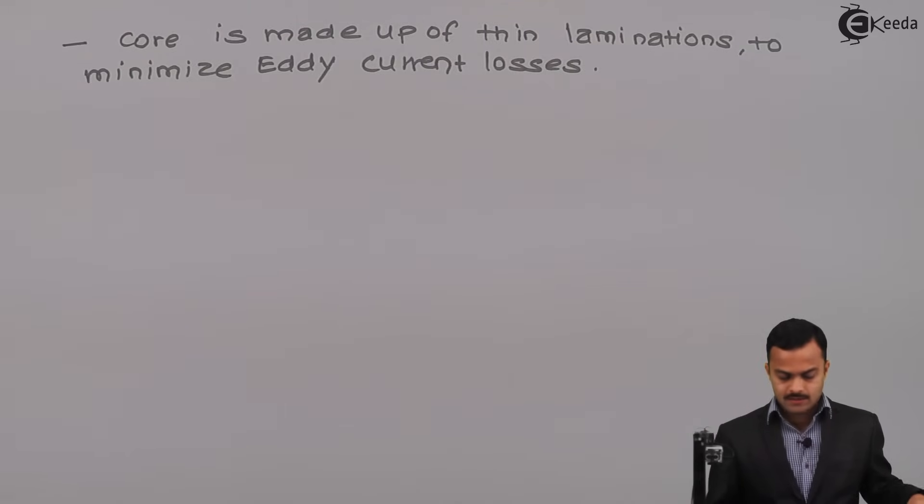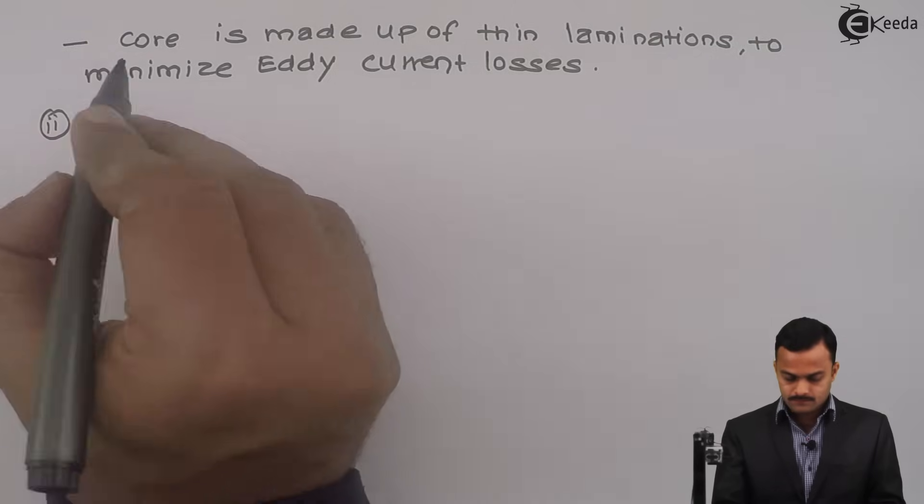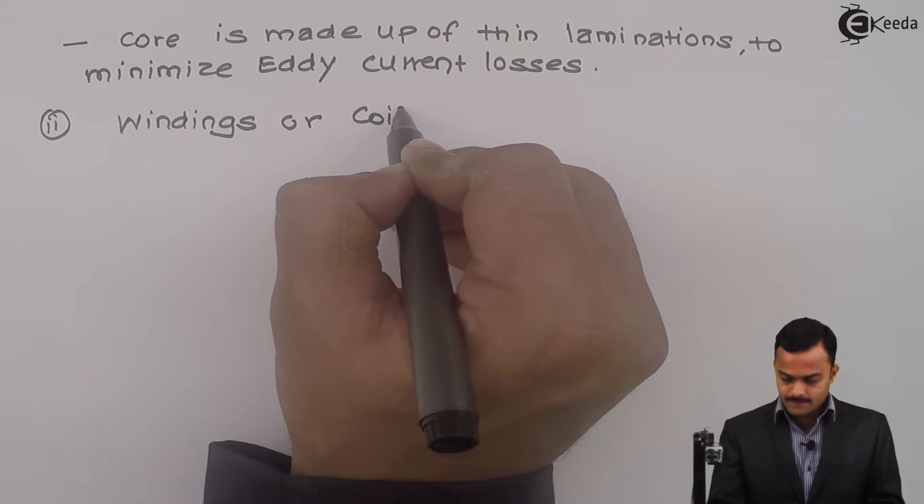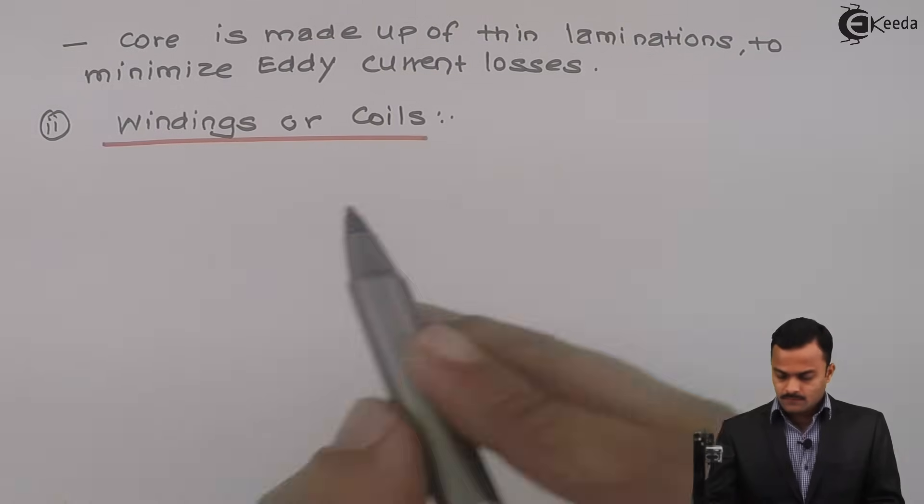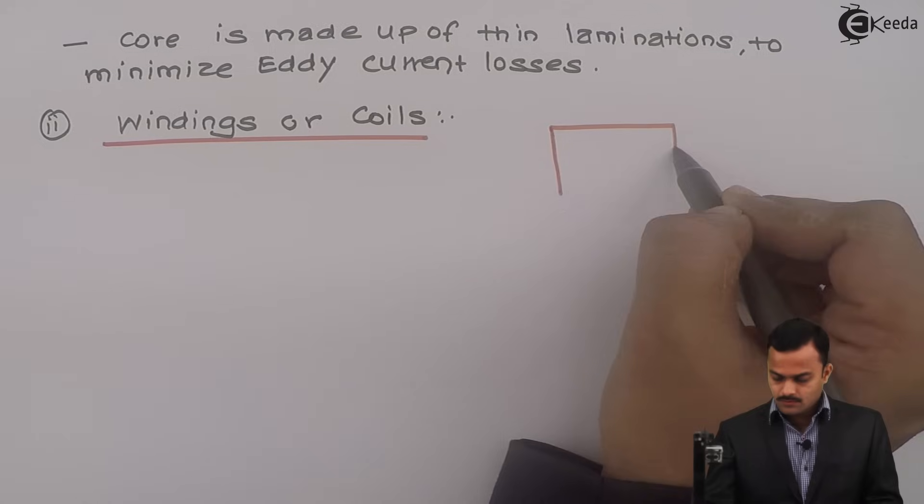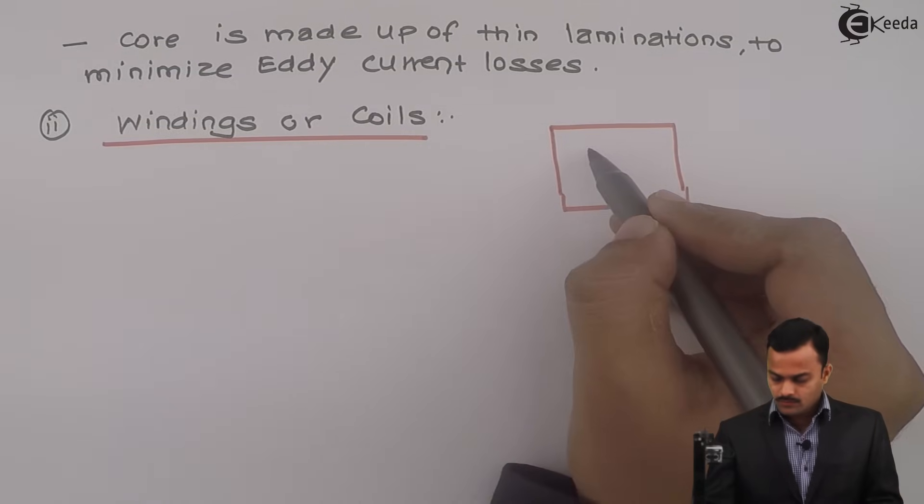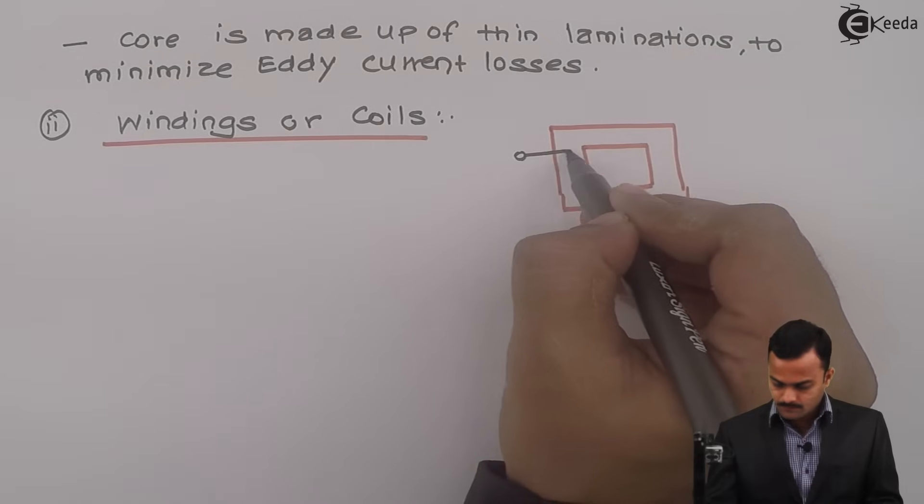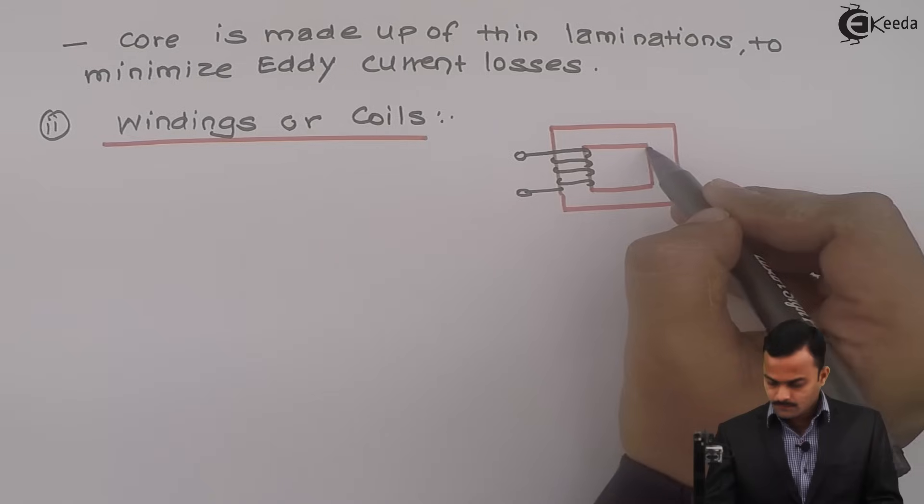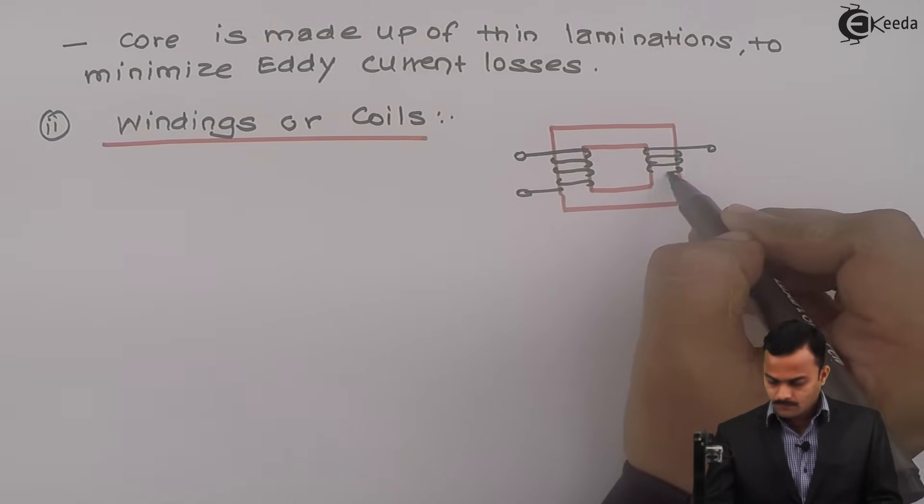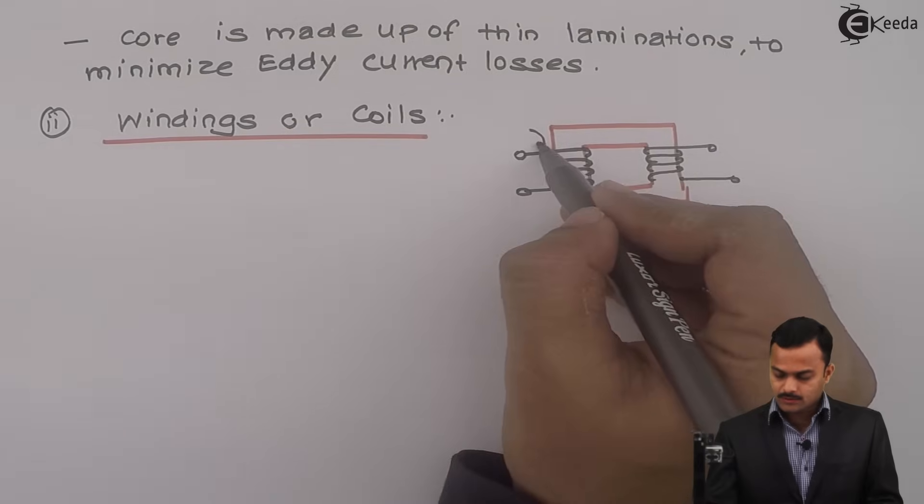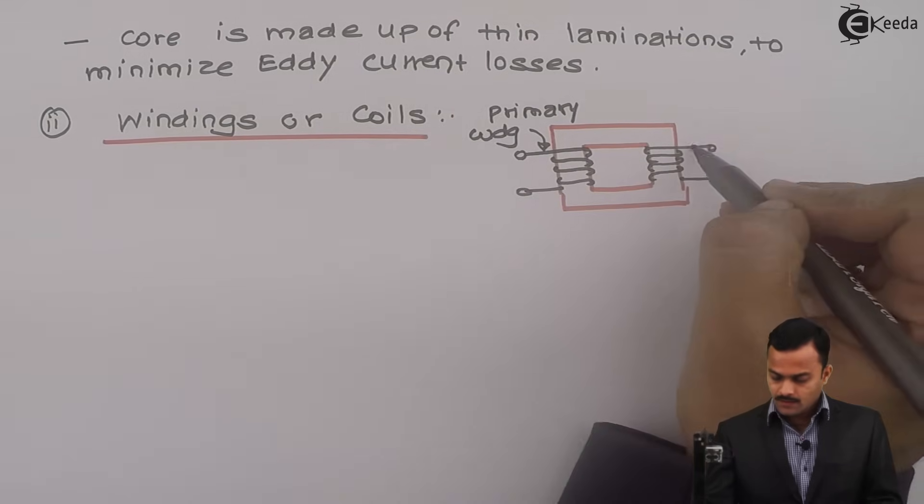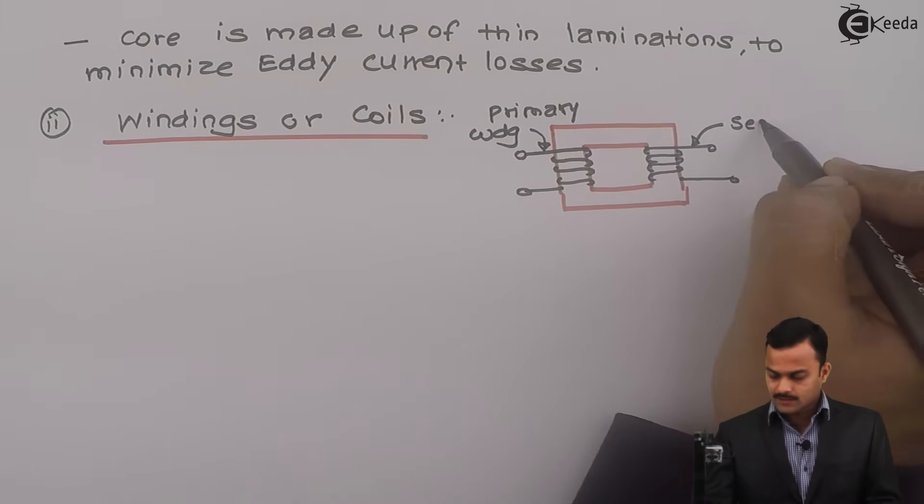Let's go to next part, that is winding or coils. So windings are wound over limbs of core like this. So these are the windings. This is called as a primary winding because we are going to connect a supply to this.